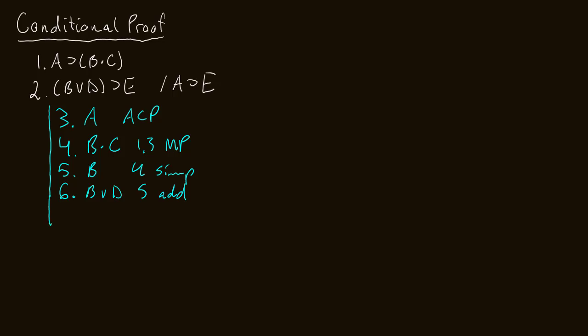On line seven we use modus ponens with lines two and six to derive E — so E comes from lines 2, 6, and modus ponens. I assumed A and through valid inference derived E. Now I discharge my conditional proof: re-indent back to the left, and on line eight write: if A then E. We've logically shown this from lines three through seven using a conditional proof. If you assume A in conjunction with our given premises, you will always derive E — therefore we've proved if A then E.